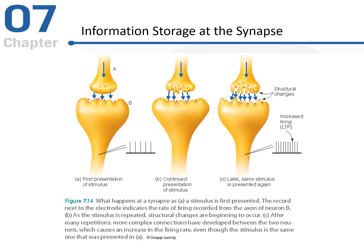Here's a figure that demonstrates long-term potentiation and this increased firing over time. We have neuron A and neuron B with a synapse — the gap between the two of them. The first presentation of a stimulus produces a bit of communication here. With continued presentation of that stimulus, we're going to have more communication. Eventually we're going to have structural changes that occur as a function of this increased firing. Over time, we're going to see structural changes to neuron A and to neuron B.